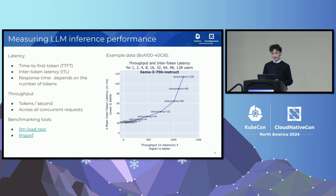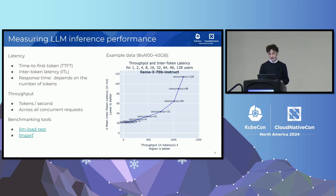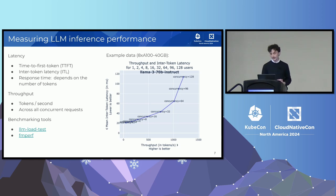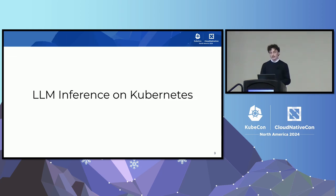On the right-hand side of this slide is example performance data with throughput on the x-axis and average ITL on the y-axis. Each point represents a load test simulating a certain number of concurrent users. Note the latency-throughput curve — there's a tradeoff between throughput and latency depending on the level of concurrency.